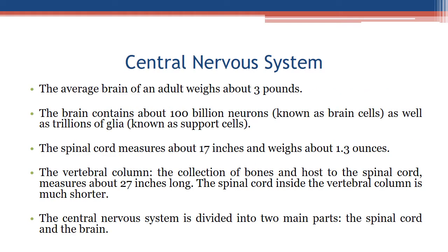Central nervous system: the average brain of an adult weighs about three pounds and contains about 100 billion neurons known as brain cells, as well as trillions of glia known as support cells. The spinal cord measures about 17 inches and weighs about 1.3 ounces. The vertebral column, which hosts the spinal cord, measures about 27 inches long, while the spinal cord inside is much shorter.